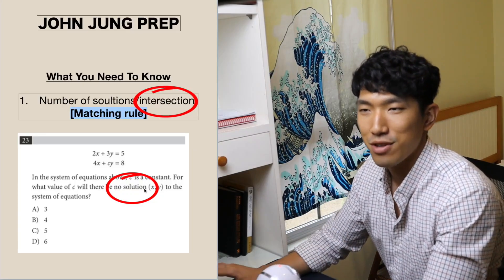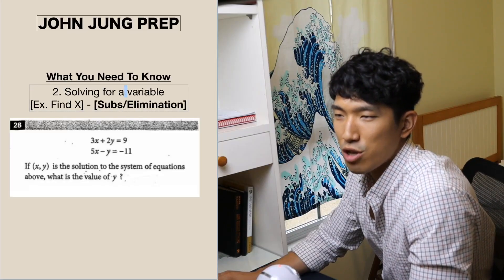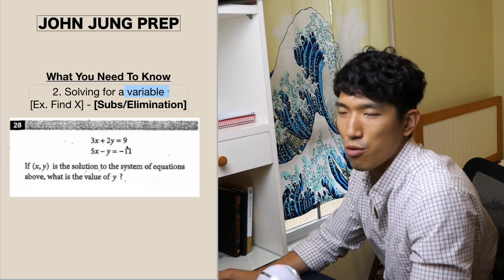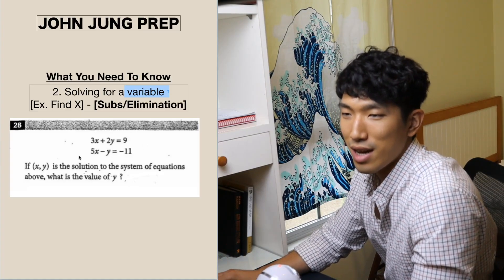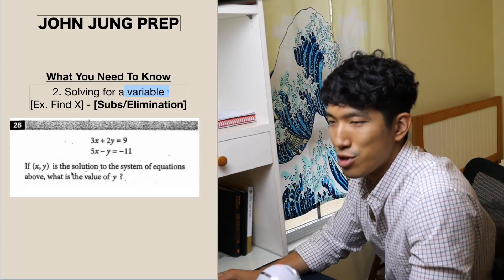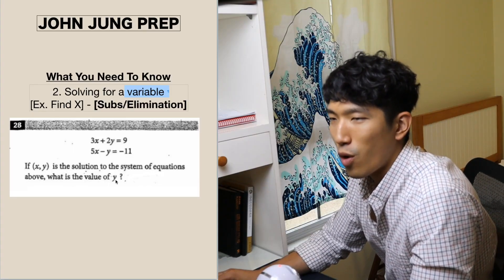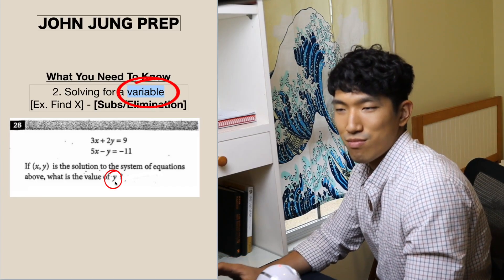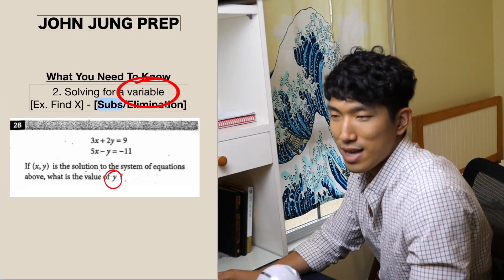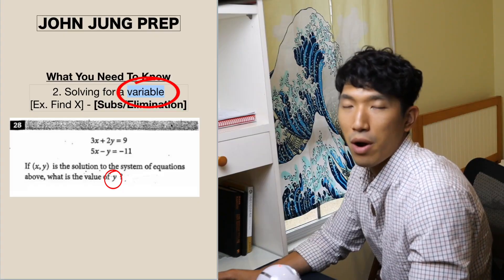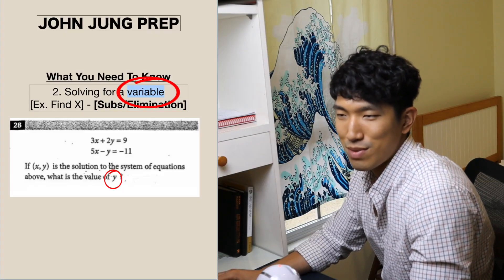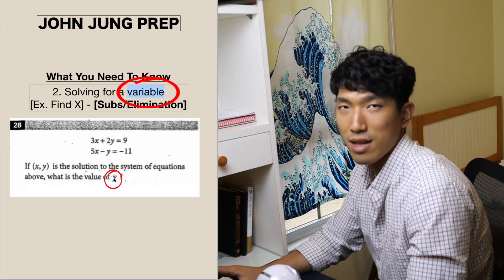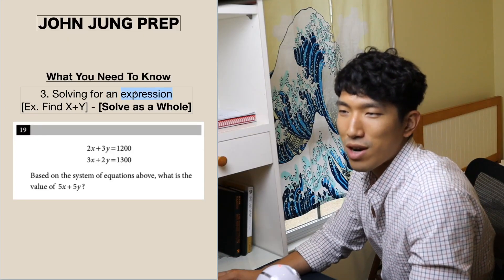The second type is solving for a variable when there is a system. Looking at a question with two equations, if it says 'if x and y is the solution to the system of equations above, what's the value of y?' — we are solving for a variable, y. In this case, we use substitution and elimination to solve for that variable.